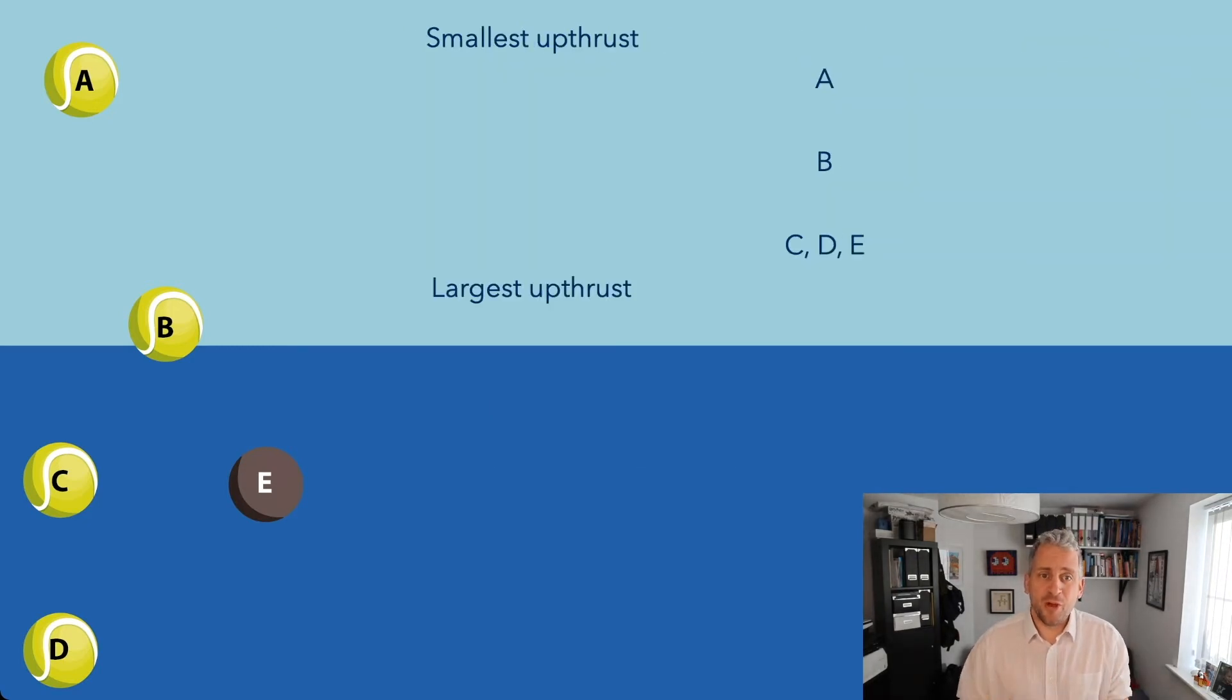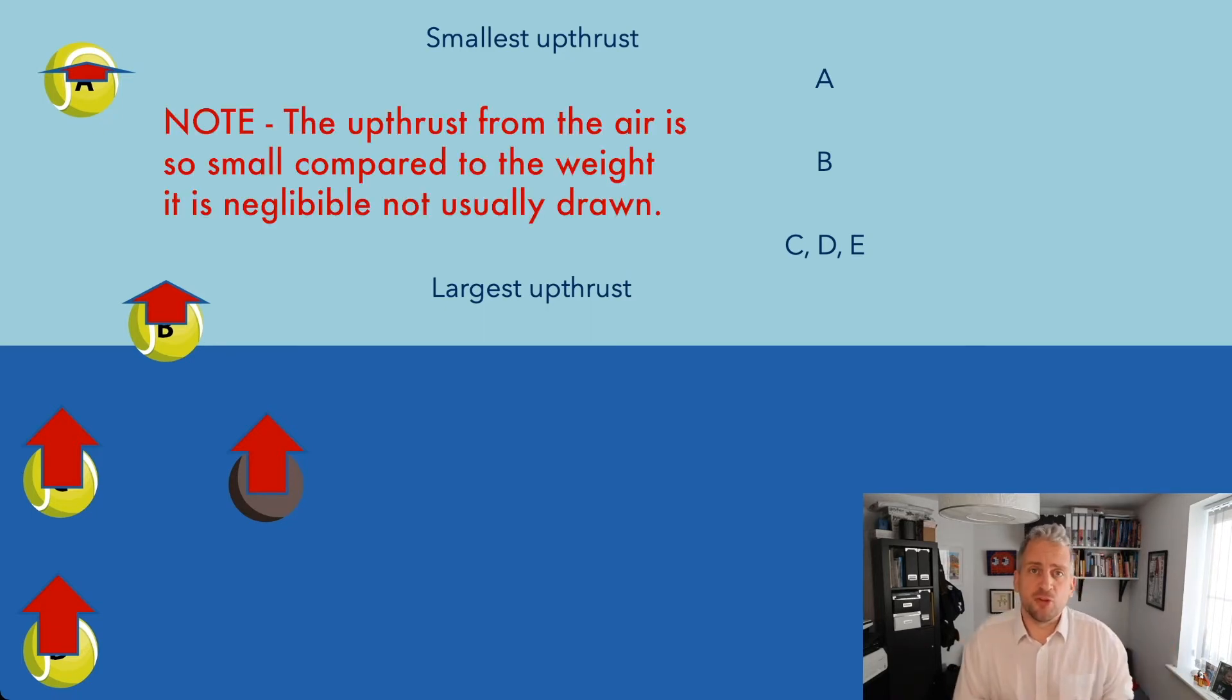Okay you will notice that the ball that's got the smallest up thrust is A. That's because the only thing it's displacing is the air. B is displacing some water and some air so that's got a slightly bigger force. C, D and E all have the same up thrust because they're all displacing the same volume, the same mass of water. In fact normally on this diagram you wouldn't even draw the force at A because actually the up thrust from the air is insignificant compared to the weight of that ball.